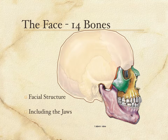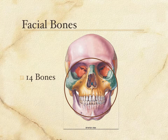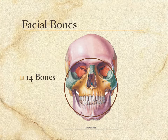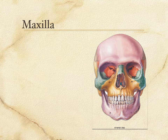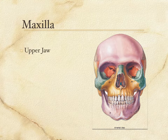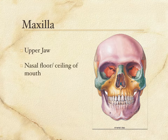Here is the face with the cranium eliminated. You can see that part of the orbit — the eye socket — is structured from the frontal bone, which is part of the cranium. But let's focus on these 14 bones, most of them paired. In the anterior part of the face, probably the most prominent bone is called the maxilla — the bone in yellow. You can see it forms all of the upper jaw, and all of the upper teeth are in the maxilla. The maxilla therefore forms a good deal of the roof of the mouth, or the ceiling of the mouth, and thus the nasal cavity floor.